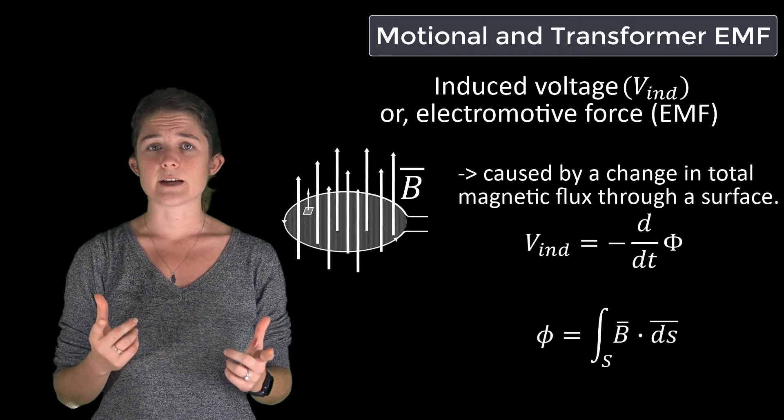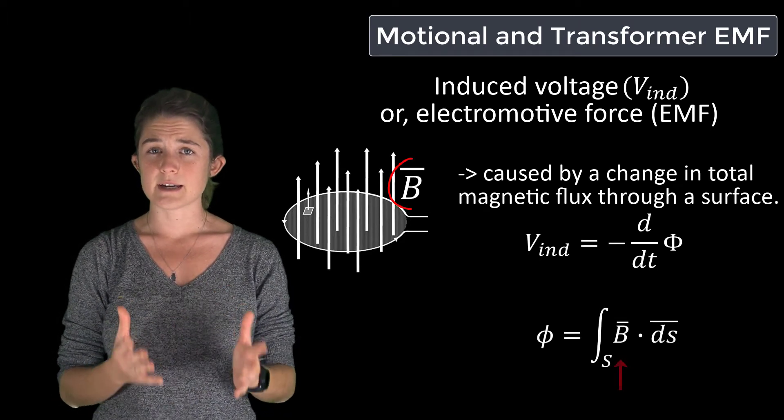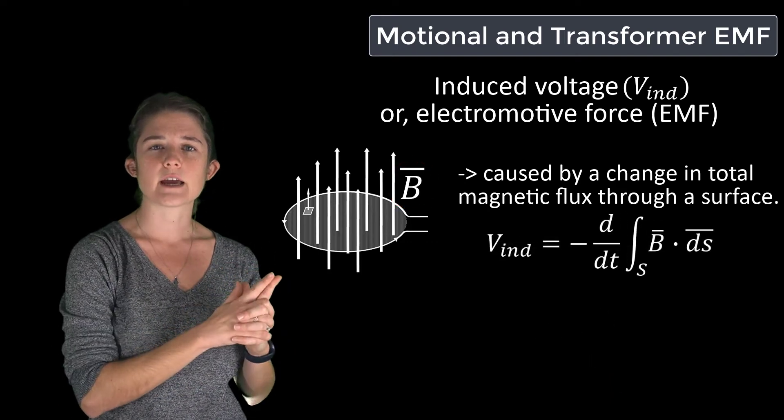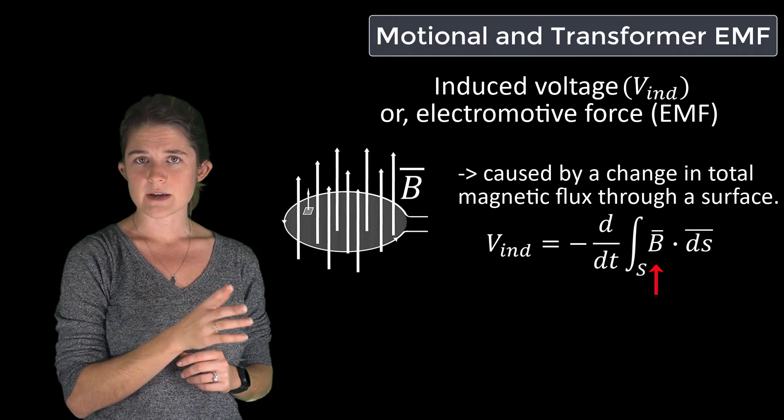There are two ways the flux phi through a surface can change. One is if the applied magnetic field changes. So consider this equation again: if the magnetic field in the region of the loop changes,